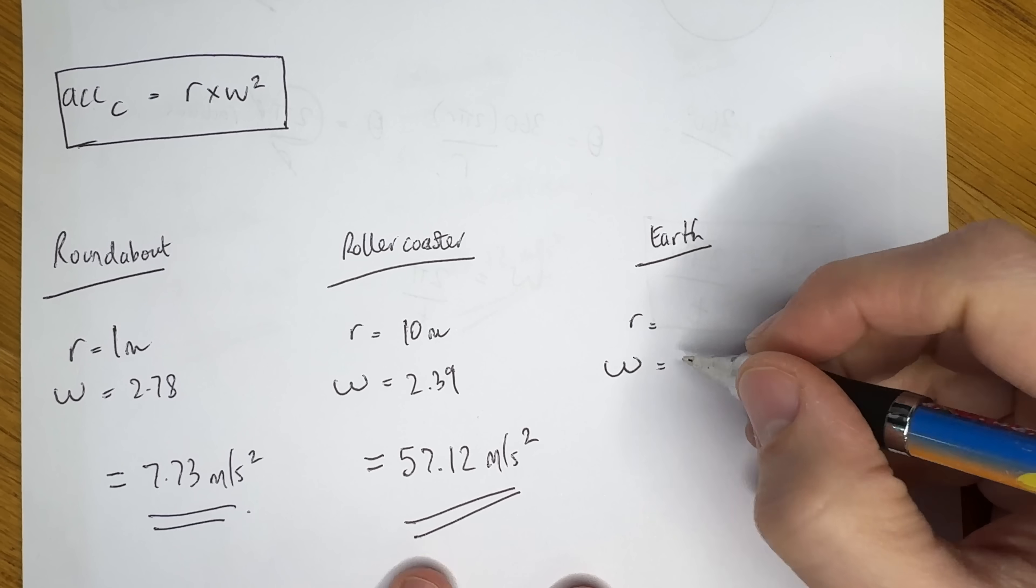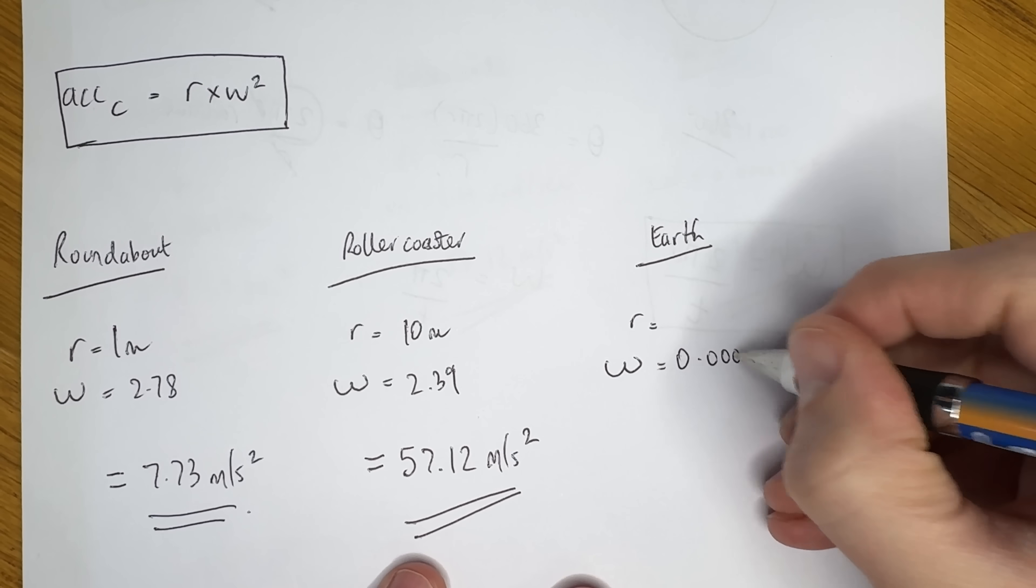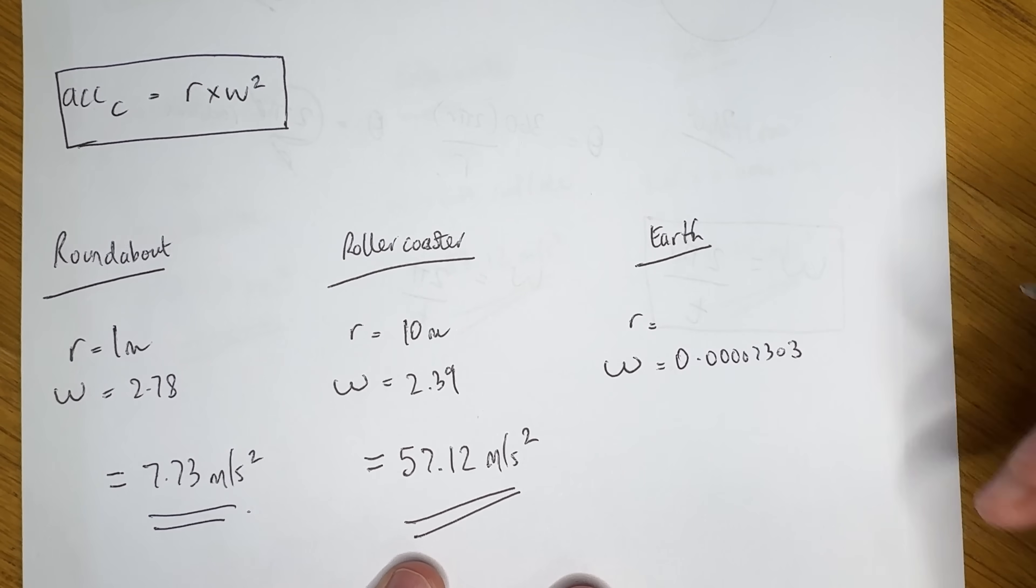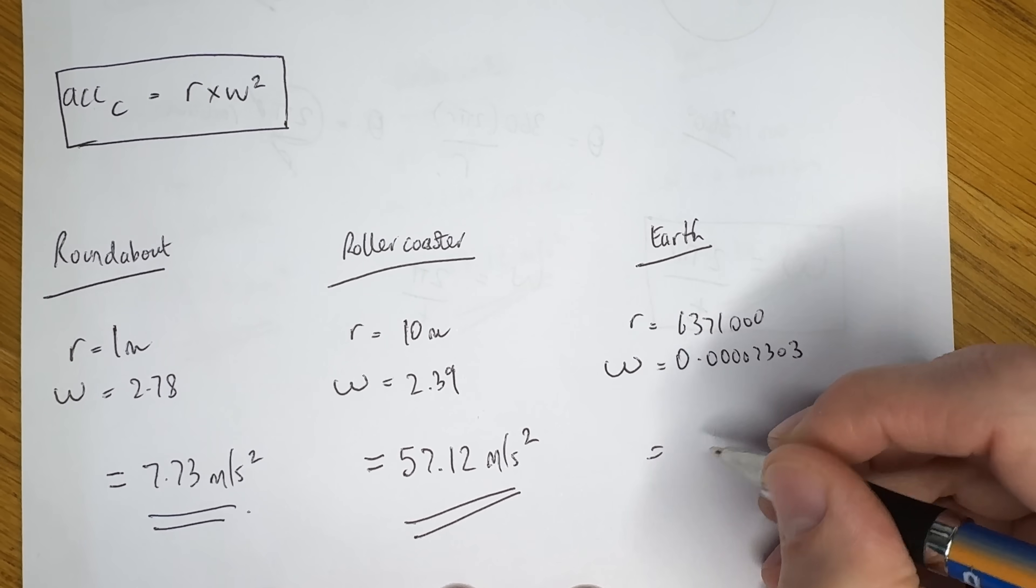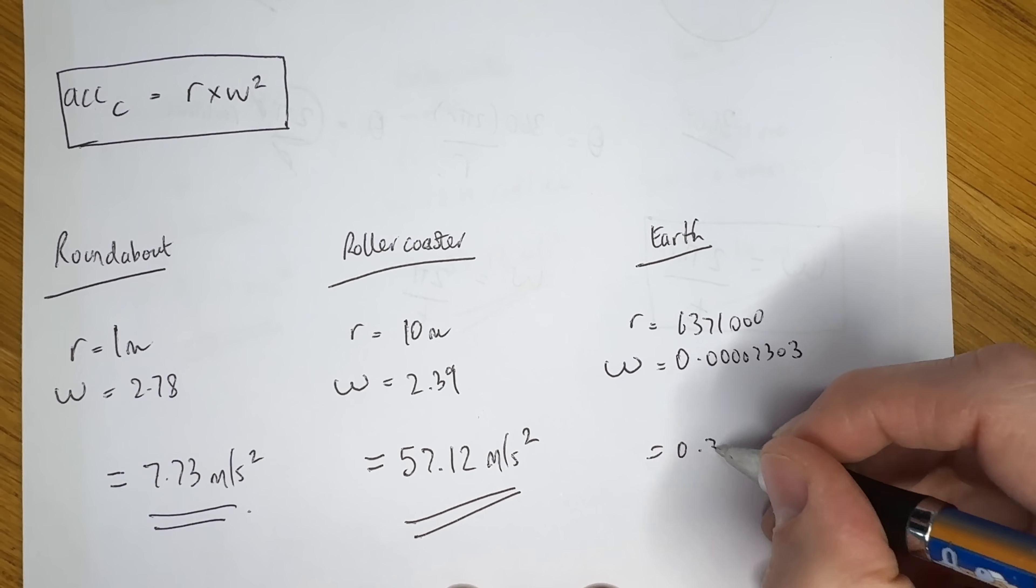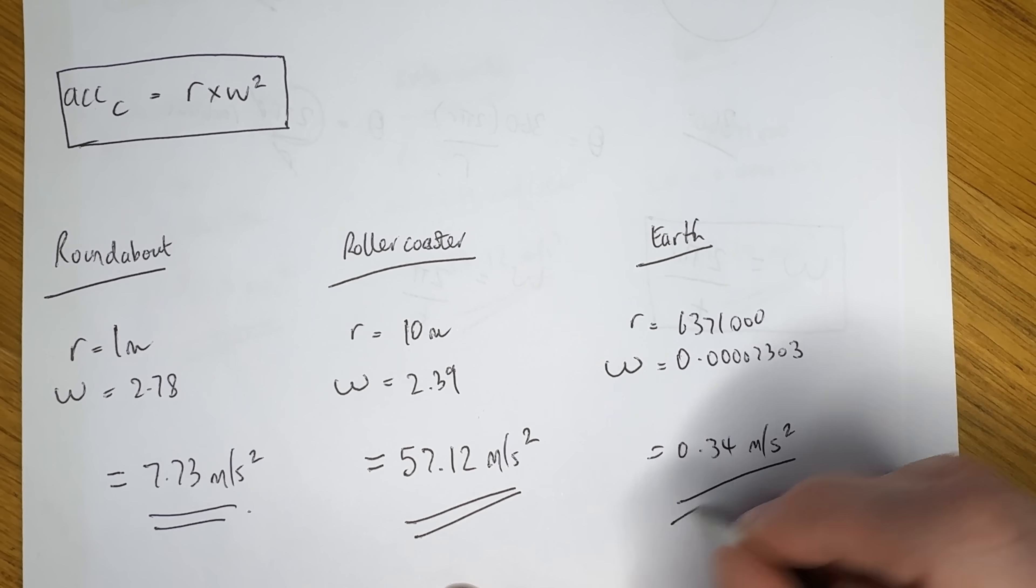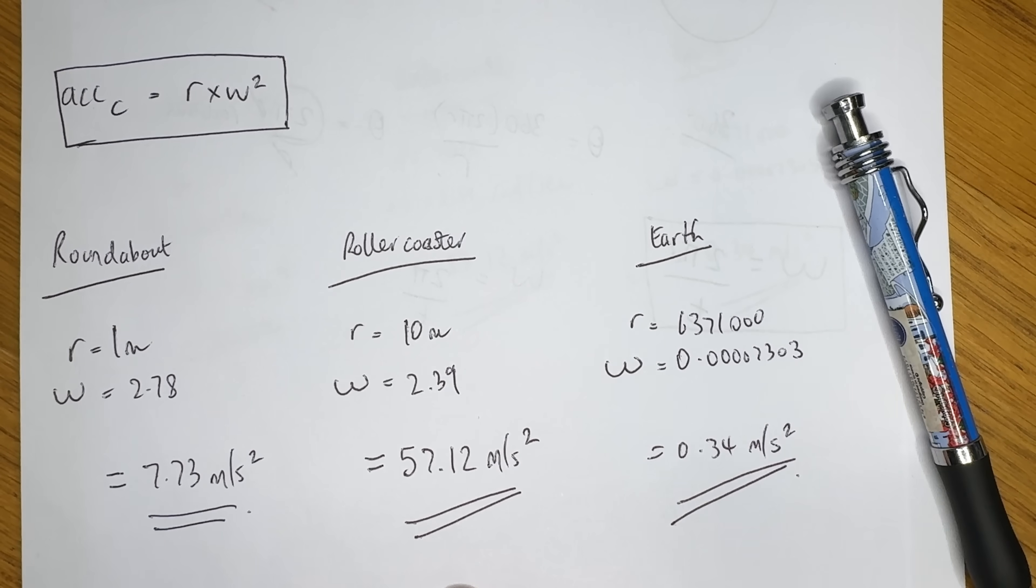And finally, the Earth. Let's take our angular speed of 0.00007303, square it, and then multiply it by 6,371,000, and we get 0.34 metres per second squared of centripetal acceleration. That is why we can feel the acceleration on a roundabout and a roller coaster, but not the Earth. 0.34 metres per second makes hardly any difference at all to the acceleration we feel from gravity. Well, I think that's comprehensively put that meme to bed, hasn't it?